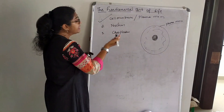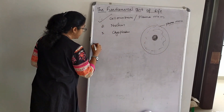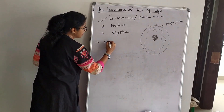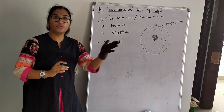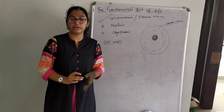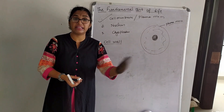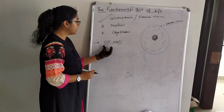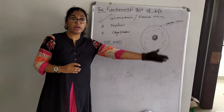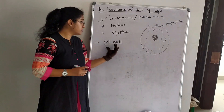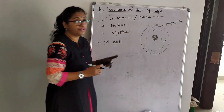There is also another layer surrounding the plasma membrane which is known as the cell wall. Think of it like a compound wall around a house — it is there so that strangers cannot get in and out easily. Similarly, the cell wall gives the outer covering of a cell.